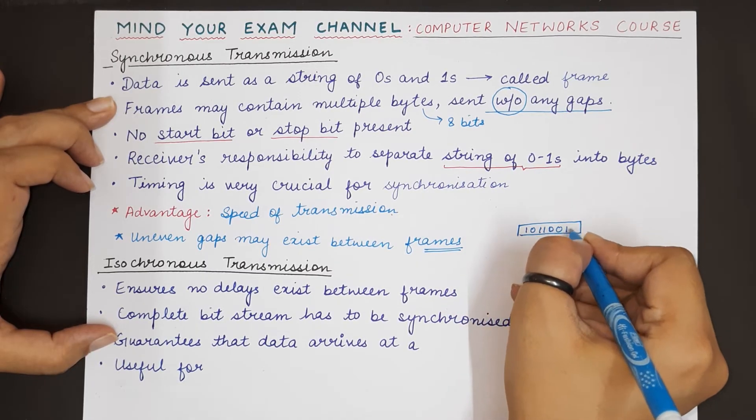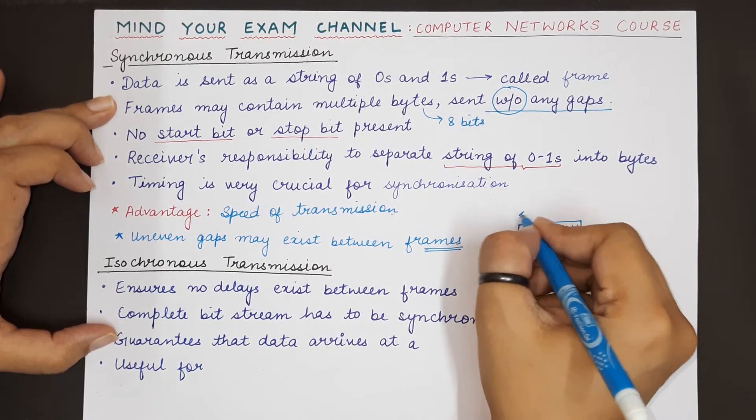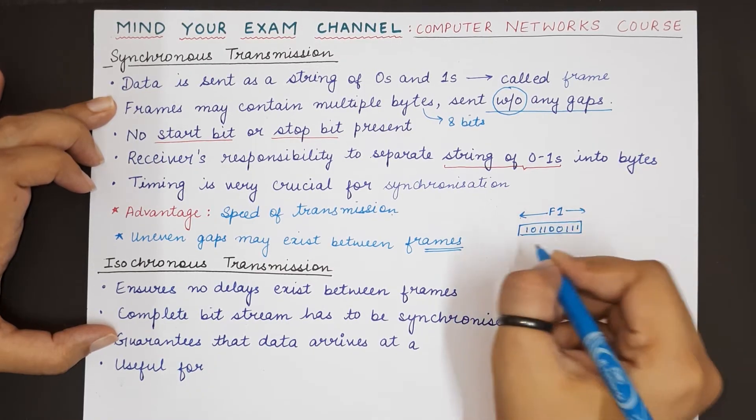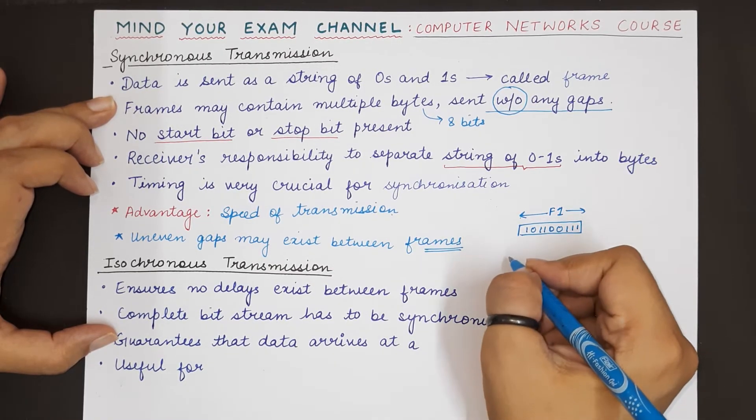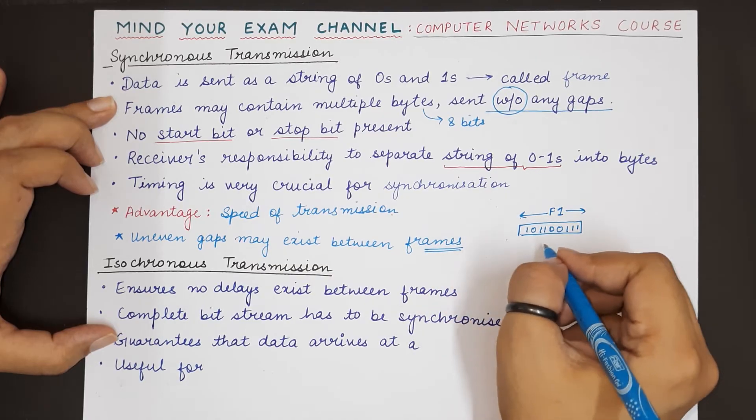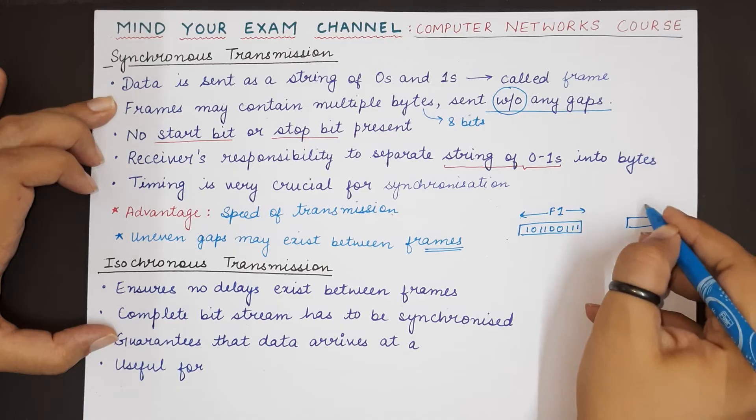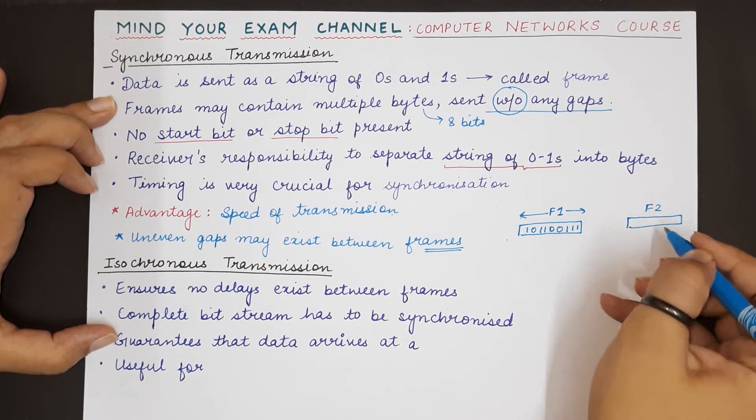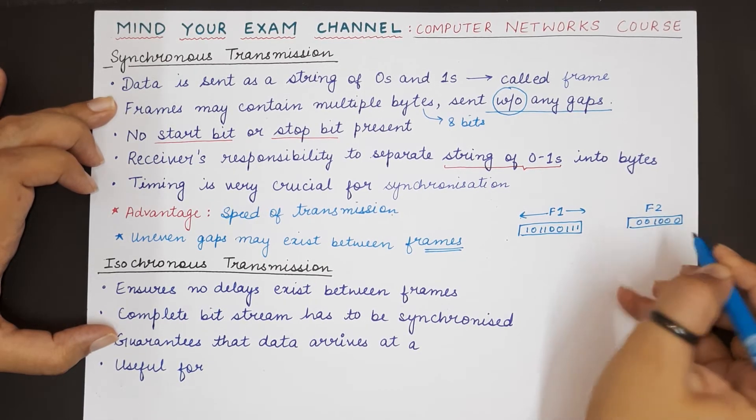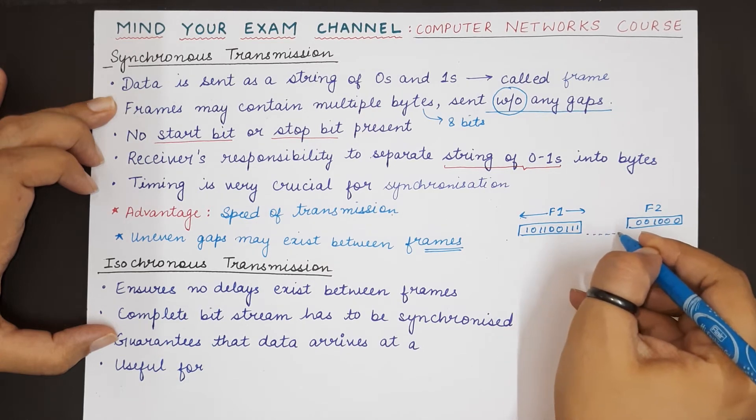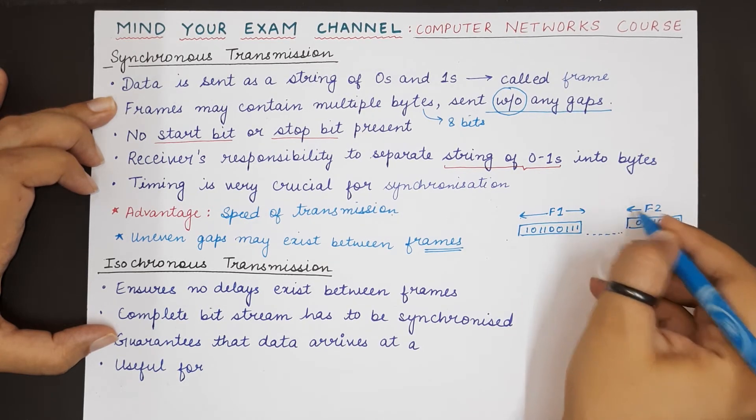uneven gaps. If this is one frame, say frame 1, then all the bits inside this frame will not have any gap. Another frame, F2, might have some other data, but the time gap between these frames might be different.